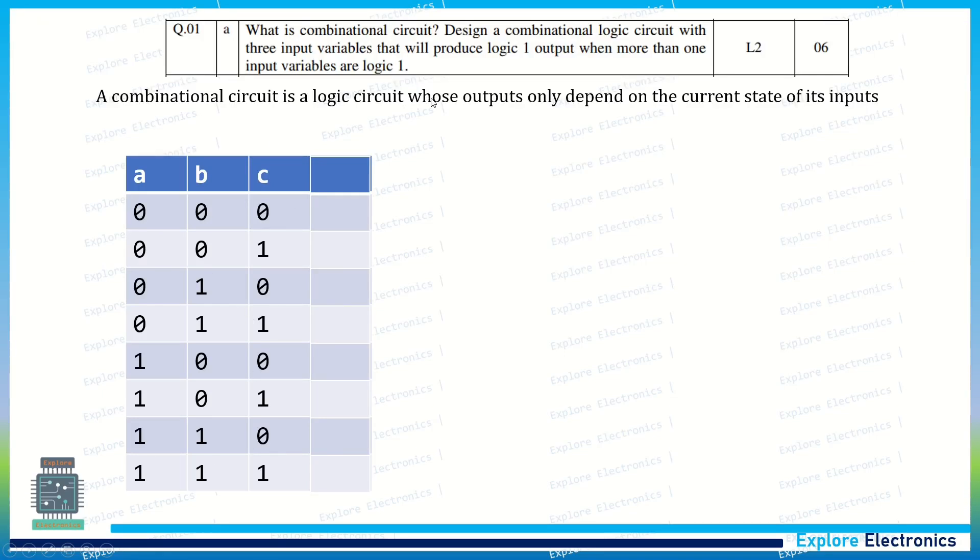And the output—we need to write the output logic. This combination of inputs will produce logic one when more than one input variable is having logic one, meaning out of three, if two are having one input, then output can be one. If you look at these combinations, here we have two ones in ABC, we can take this as output one.